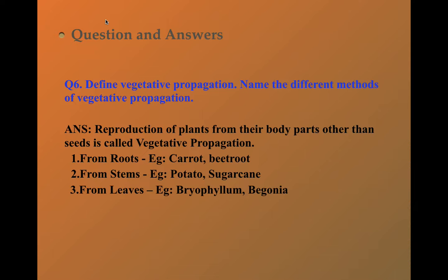One, from roots. Example, carrot, beetroot. Second, from stems. Example, potato, sugar cane. Third, from leaves. Example, bryophyllum and begonia.